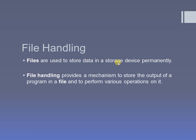File handling provides a mechanism which is useful to perform different operations on files. A file is used to store data. For that, we need to perform different operations like opening a file, creating a file, storing data — that is writing data — and accessing data, which is reading data from a file. After performing these different operations, we can close a file.